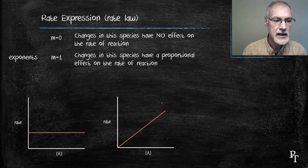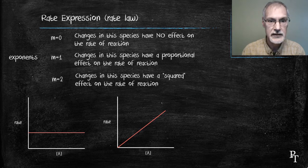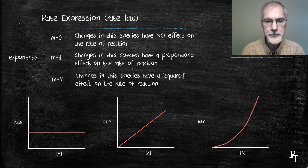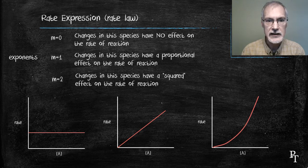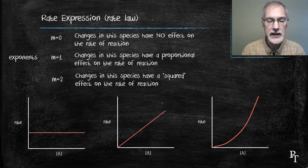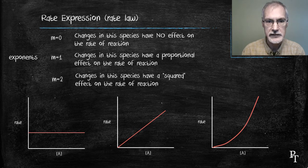And finally, we have the exponent 2, which results in a squared effect on the rate of the reaction. This looks like an exponential curve. Here, doubling A results in a two-squared effect, or a four-fold increase in the rate of the reaction. Tripling A results in a nine-fold increase.